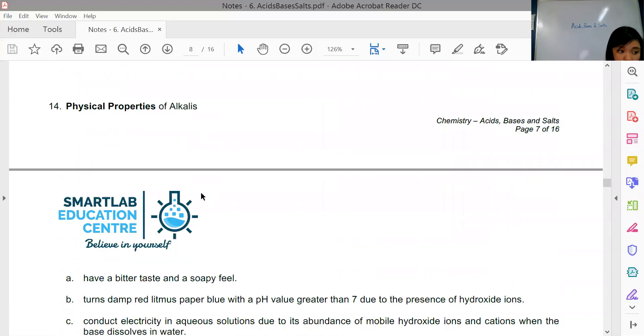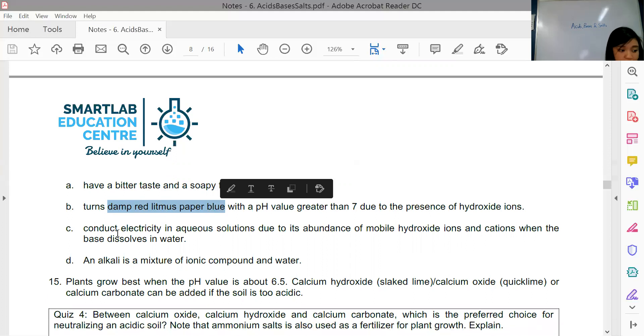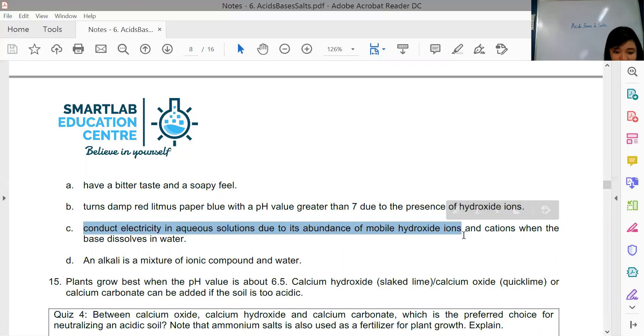The physical properties of alkalines include having a bitter taste and a soapy feel. They will turn red litmus paper to blue. We will use the word damp red litmus paper blue, provided we are testing for alkaline gas. They also conduct electricity in aqueous solution due to the abundance of mobile hydroxide ions and cations when dissolved in water.